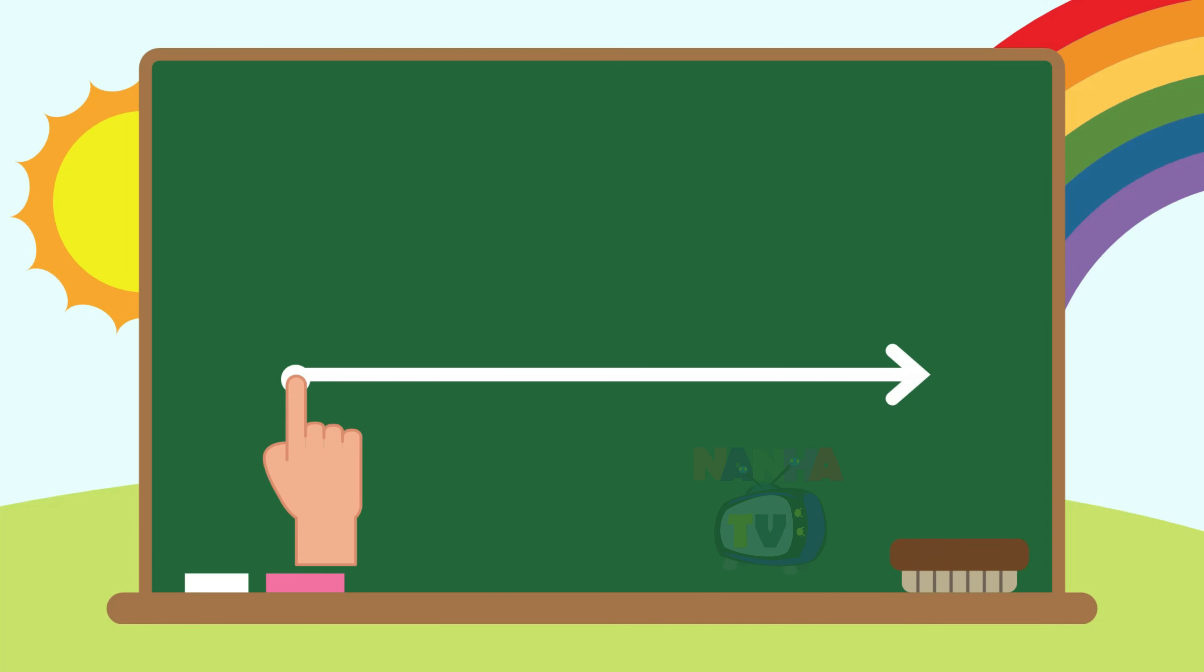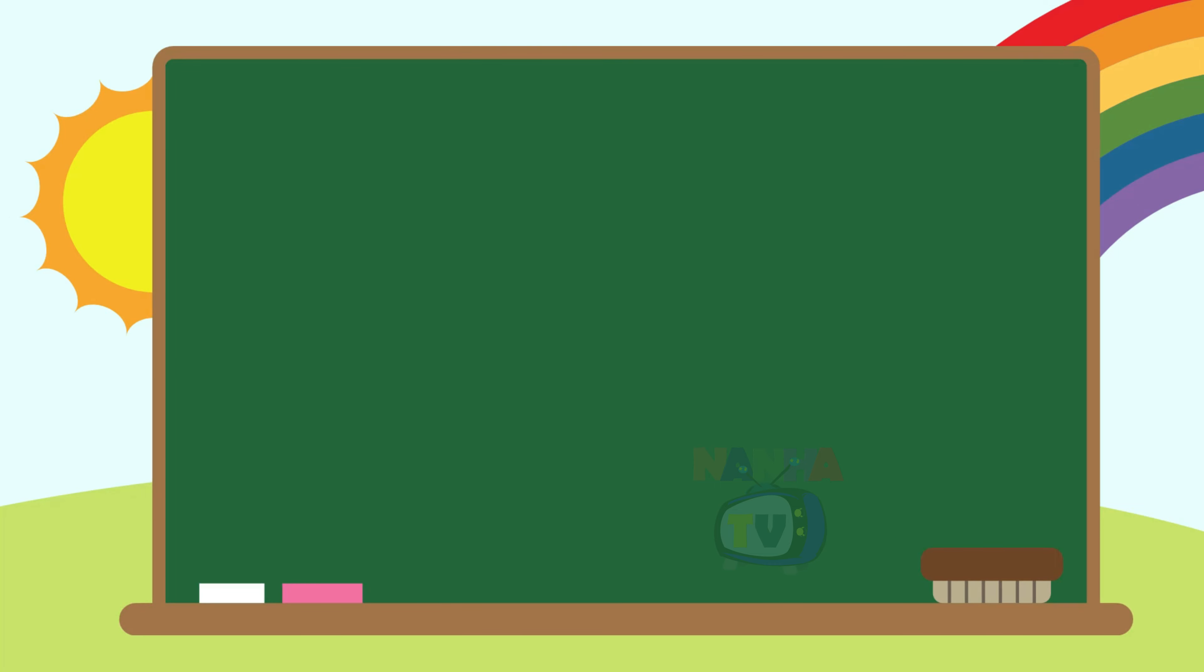Let's make another word. M. M sounds as? A. A sounds as? T. T sounds as? And this becomes the word? Mat. Mat. Well done.